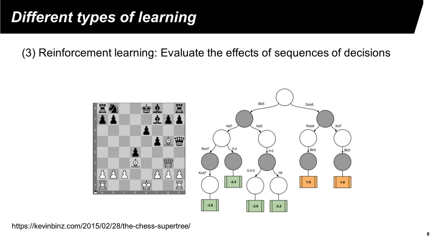Consider you are playing a chess game. Is a move a good move or a bad move? It is difficult to determine that right away. Instead, we have to wait for the game to reach a state where we can determine the winner. This is called reinforcement learning — this type of learning needs to evaluate the effect of sequences of decisions.